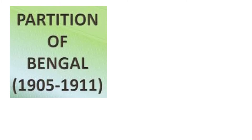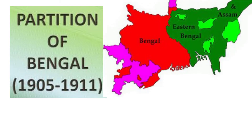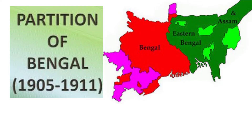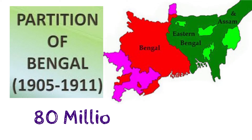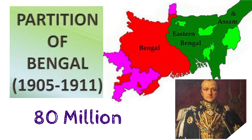Bengal had been the largest province of India since the Mughal period. It was a densely populated province with almost 80 million people. There were difficulties in administering such a large area, so Viceroy Lord Curzon proposed the partitioning of the province as an administrative measure.